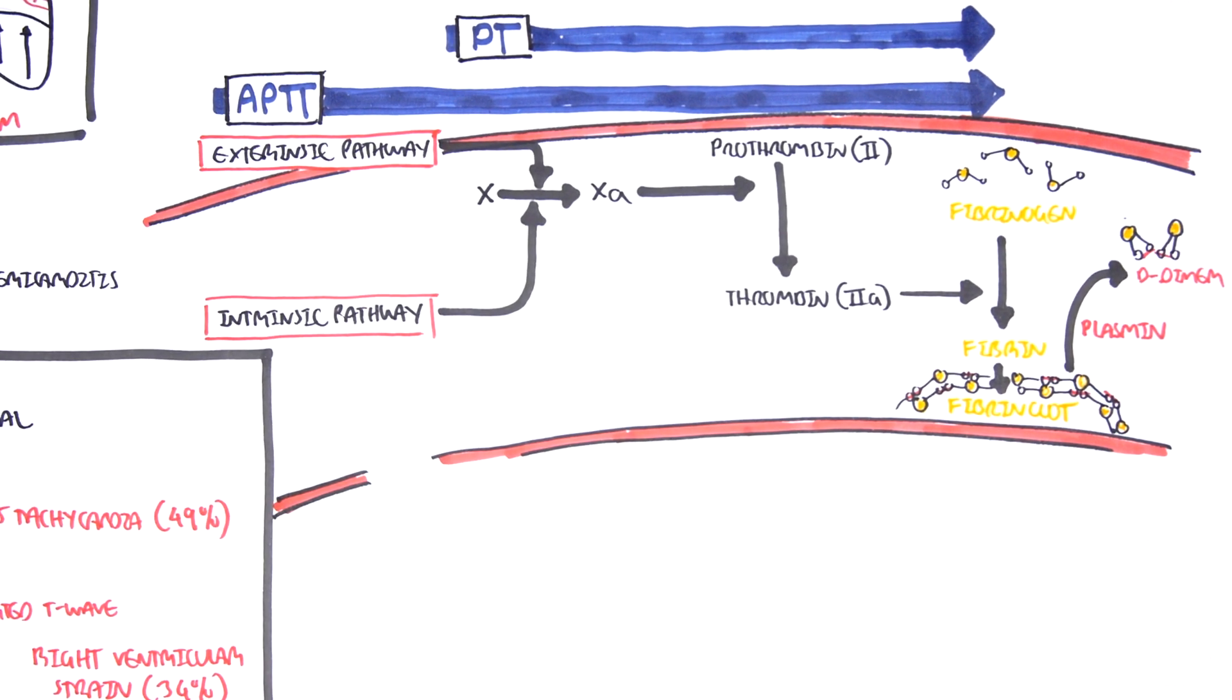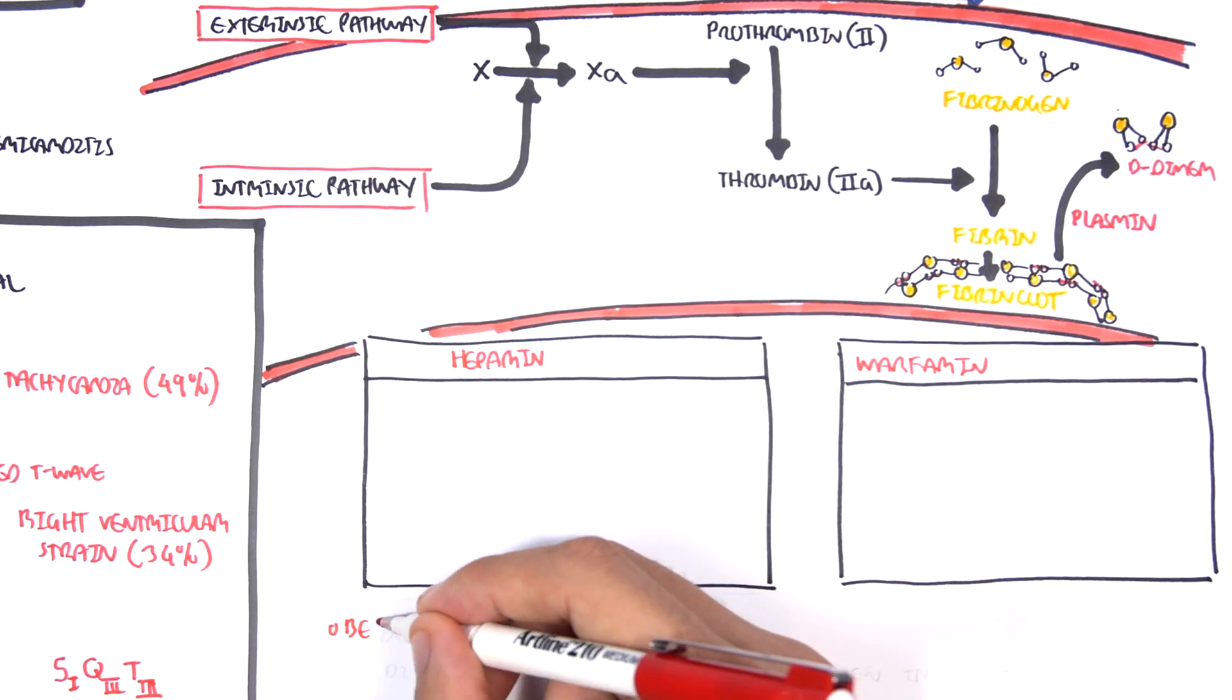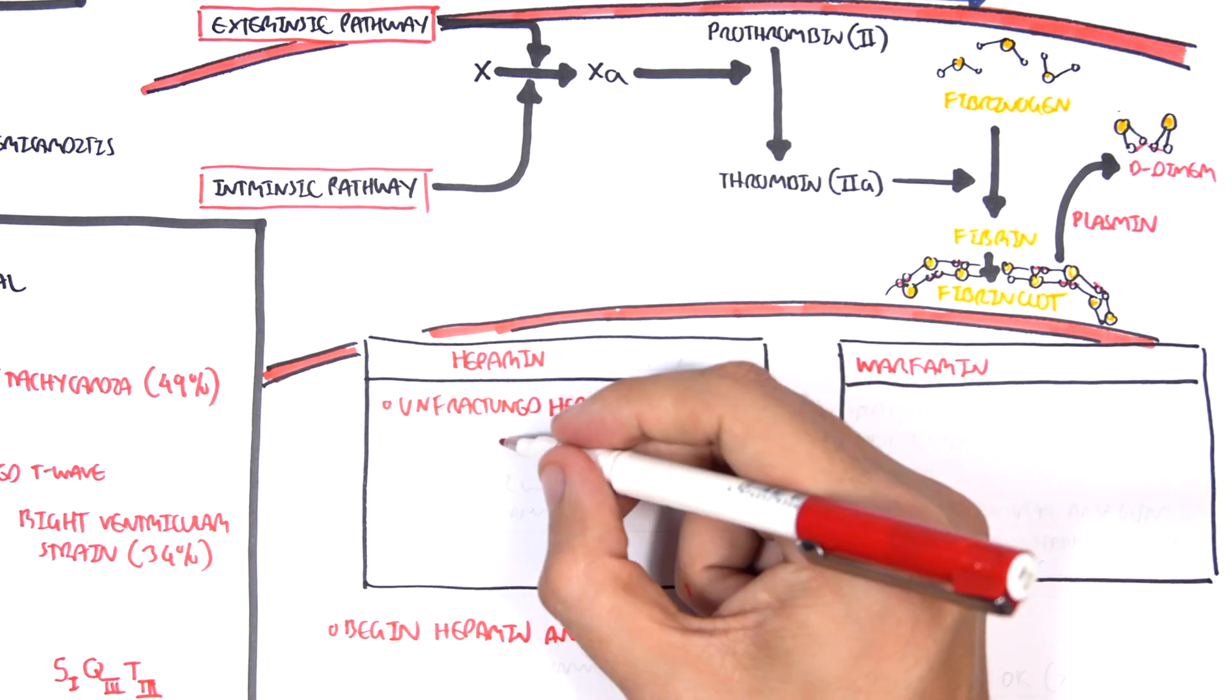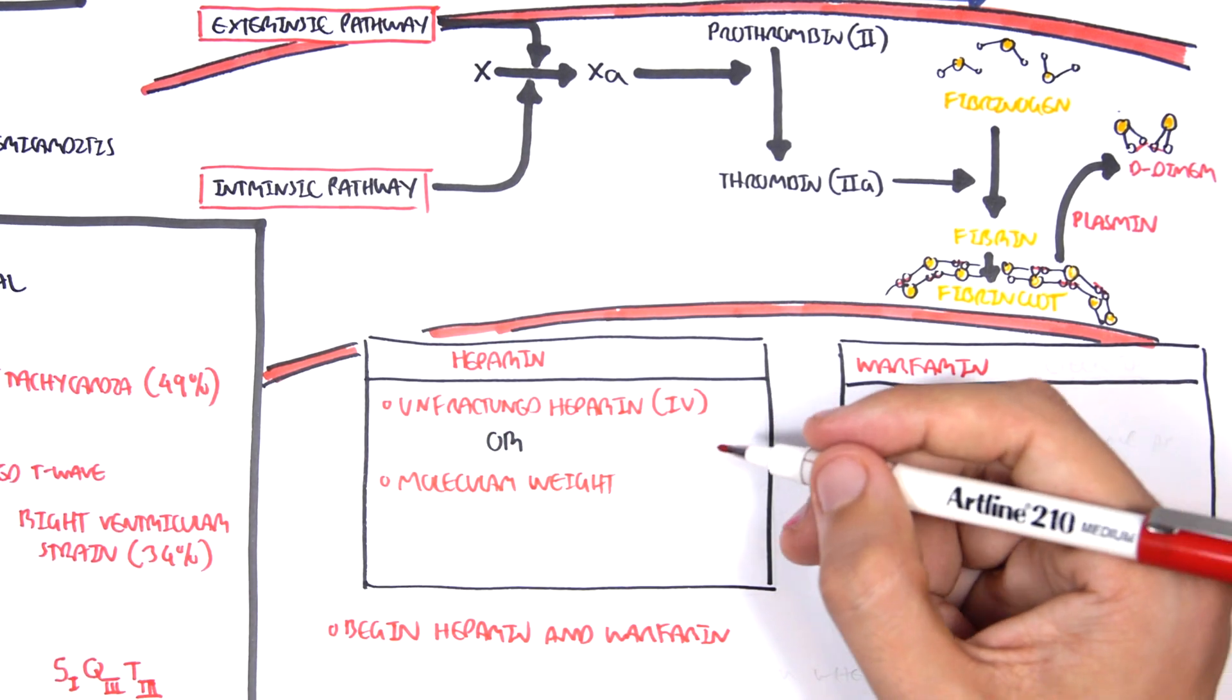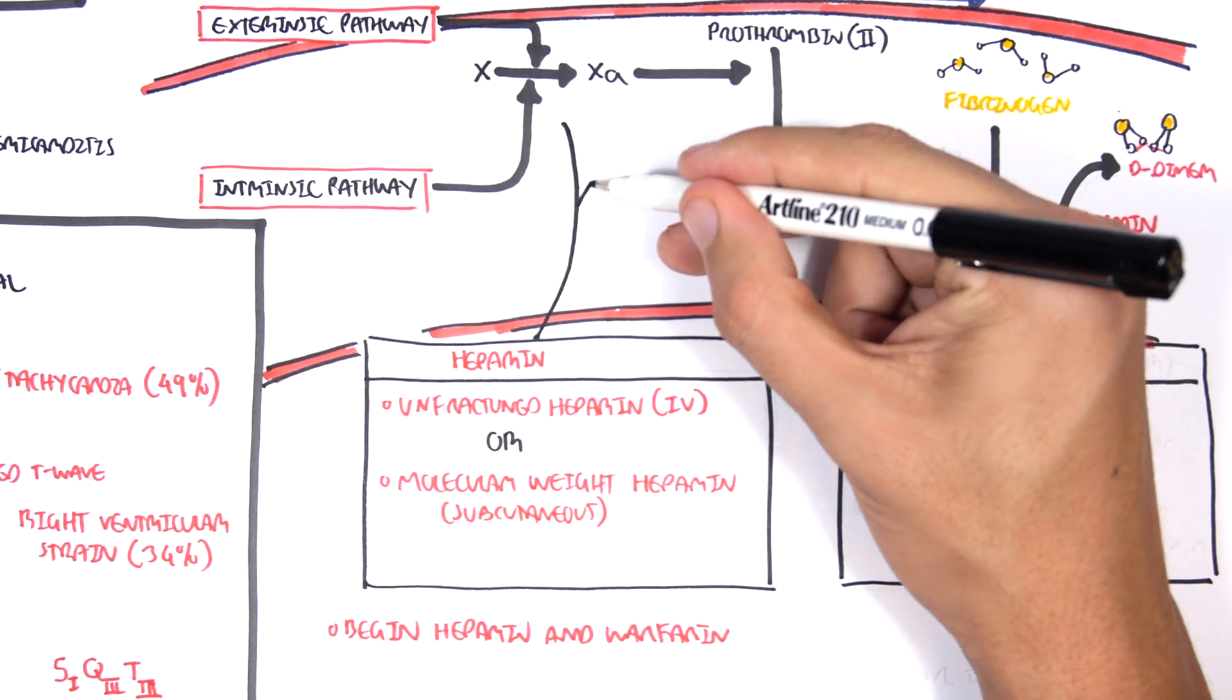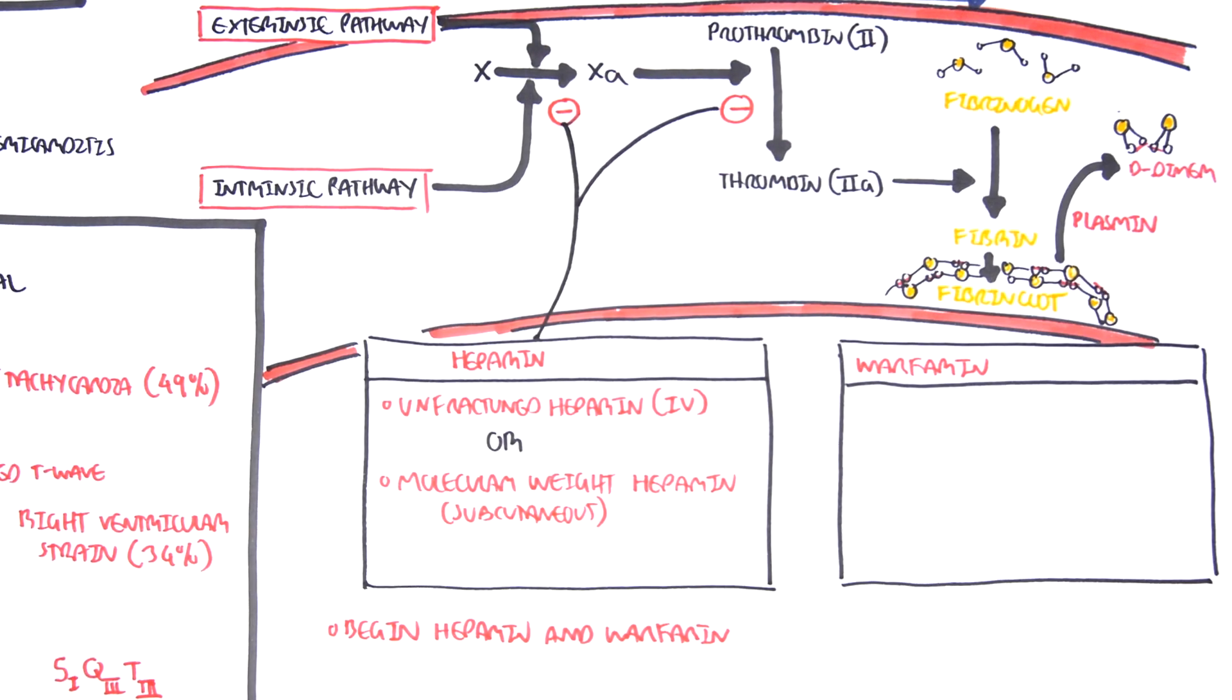Let us now move on to the anticoagulants used for pulmonary embolism. The two used are heparin and warfarin. Usually heparin and warfarin are given together with individuals who have pulmonary embolism. There are two types of heparin: unfractionated heparin, which is administered intravenously, or there is low molecular weight heparin, which is subcutaneous. The mode of action of heparin is basically that it inhibits the action or the production of clotting factors 10 and thrombin. And so essentially it inhibits the formation of the fibrin meshwork.